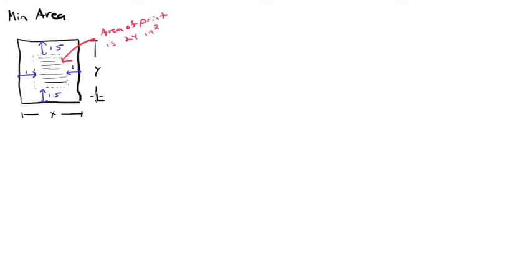All right, so we're going to do the optimization problem involving the poster. Basically, we have a sheet of paper where we need to have 24 square inches of print, with 1.5-inch margins on the top and bottom, 1-inch margins on the left and right, and I want to find the dimensions of the paper so the least amount of paper is used.